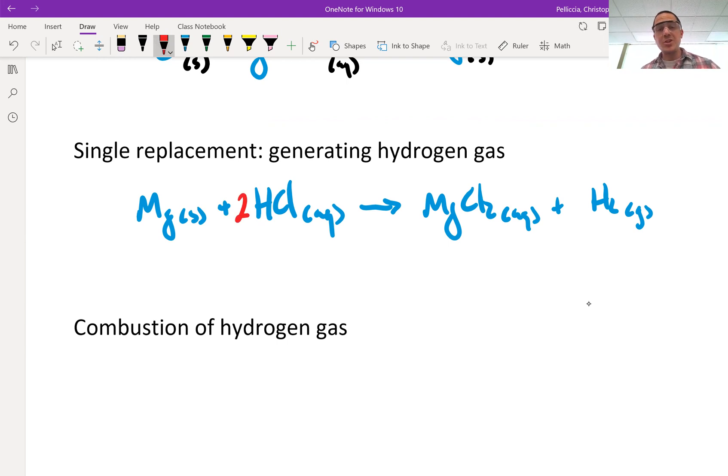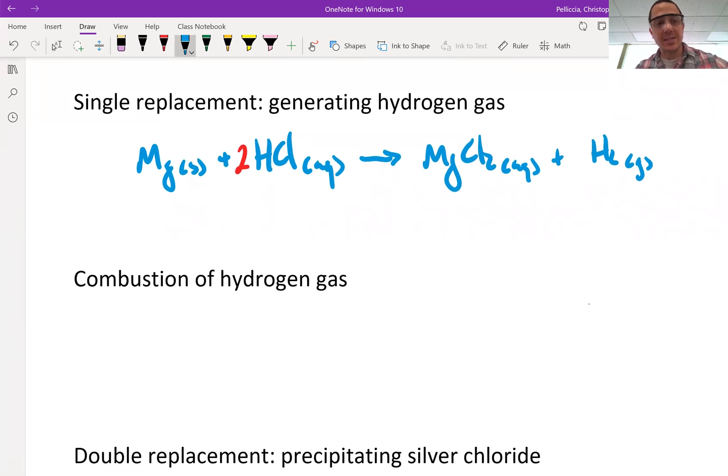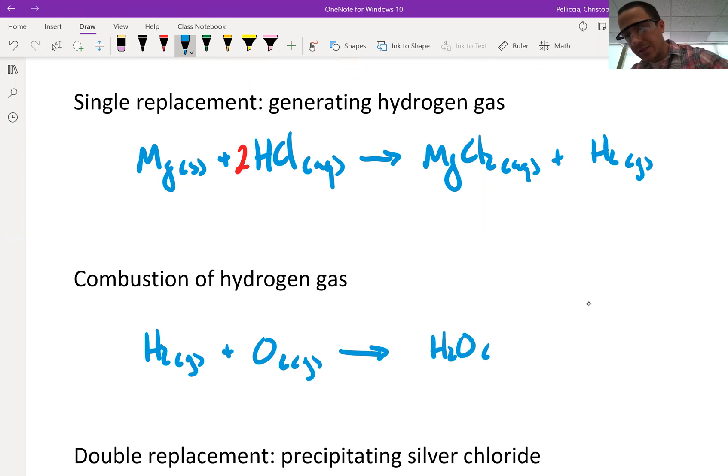Then I combusted that hydrogen gas. Combustion reaction is a fuel plus oxygen gas, yielding the product. In this case, just water vapor. Two there and two there. Of course, the second, maybe more exciting product of this is a substantial amount of energy.